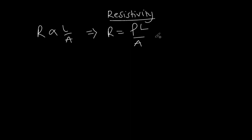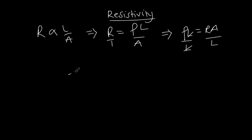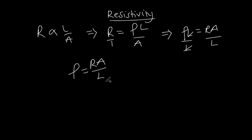If we make resistivity the subject, we rearrange so that resistivity times length equals resistance times cross-sectional area. Dividing both sides by length gives us: resistivity equals resistance times cross-sectional area divided by length. Mathematically, the resistivity of a wire is the product of resistance and cross-sectional area divided by the length.